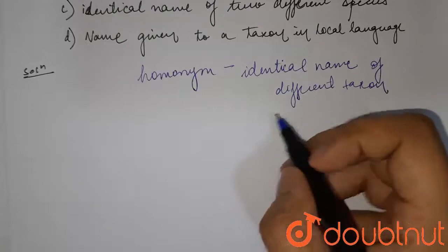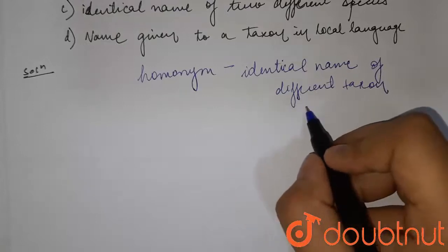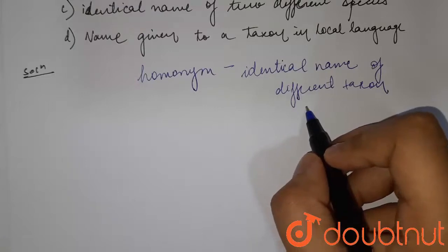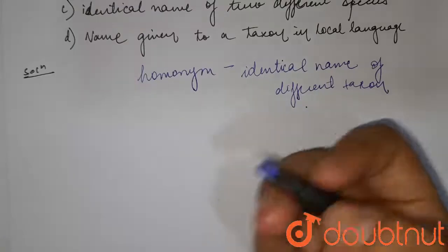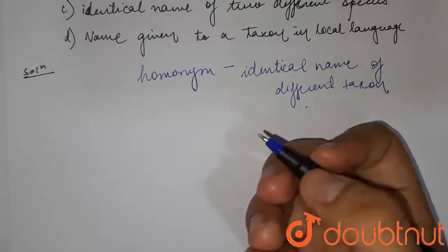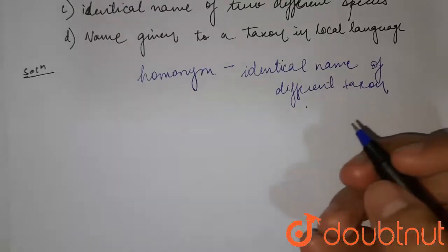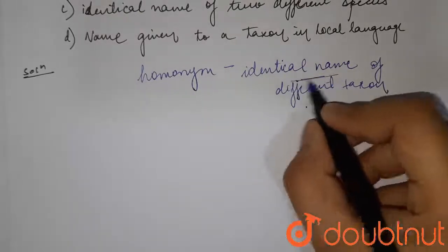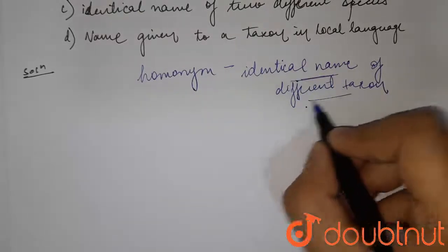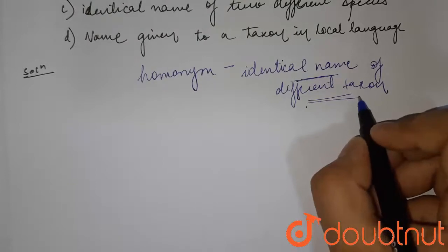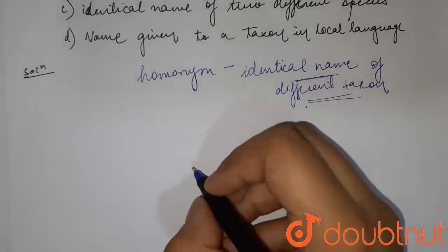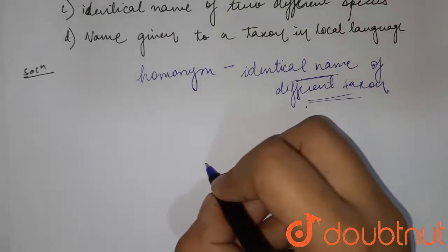For example, the scientist Scovia proposed the genus Ekinda for the spiny anteater. That means they had the same, or identical, names for different taxa. So our answer to the question would be option C.